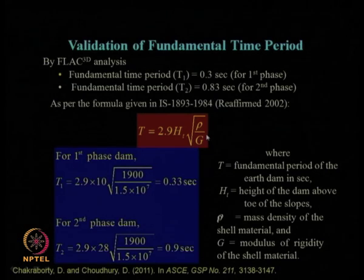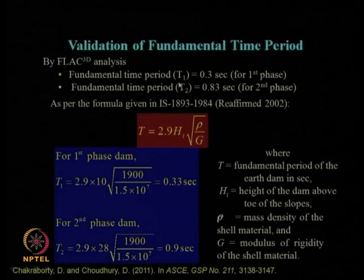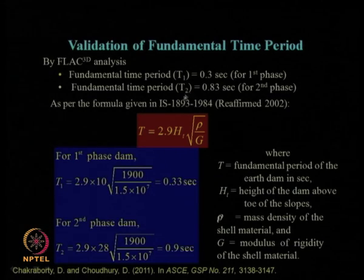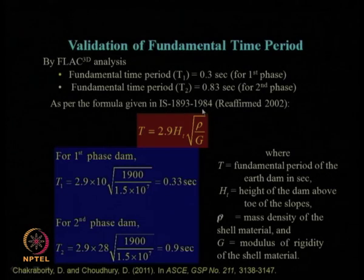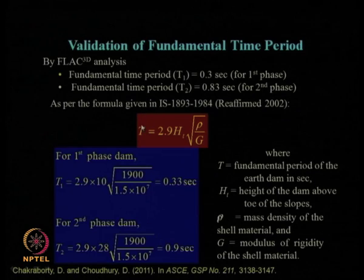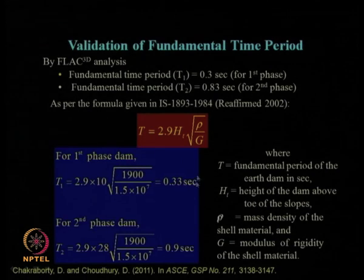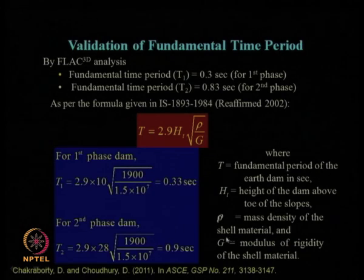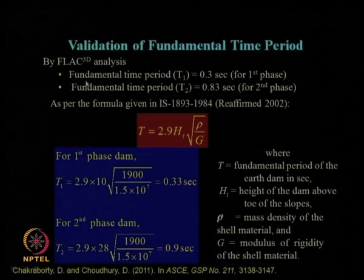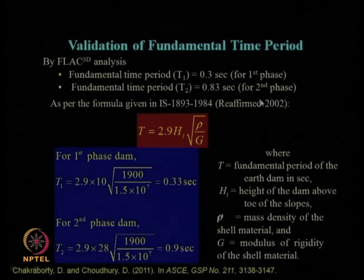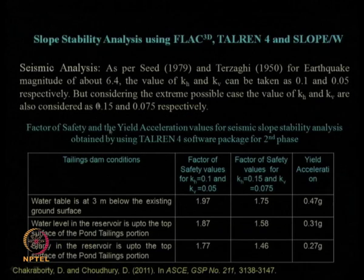We also need to calculate the fundamental time period of the entire tailing dam system. FLAC 3D directly gives the fundamental time period — for the first phase and for the second phase at 28 meters height. IS code BIS 1893 1984 version also provides a formula to calculate analytically the fundamental time period of structures like tailing dams. For the first and second phases, the values are very well comparable to those obtained in FLAC 3D analysis. When starting any design, one should follow the IS code and additionally perform numerical dynamic analysis and analytical solutions for stability and dynamic behavior.